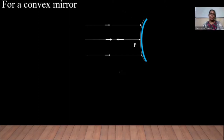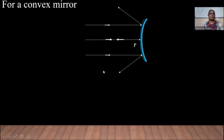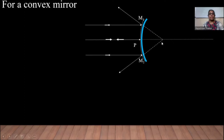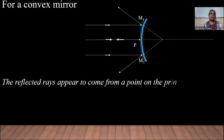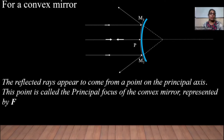They get reflected. Now, this ray is along the radius of curvature. Any ray which is incident along the radius of curvature, after reflection, it retraces the path. If we observe these reflected rays, it appears as if they are coming from a point behind the mirror. So, we get a virtual image at this point. And that point on the principal axis is called the principal focus of the convex mirror, represented by F.